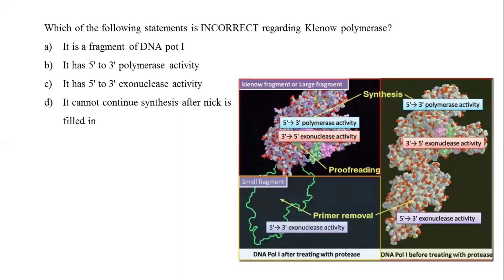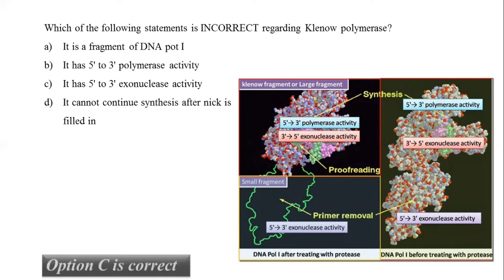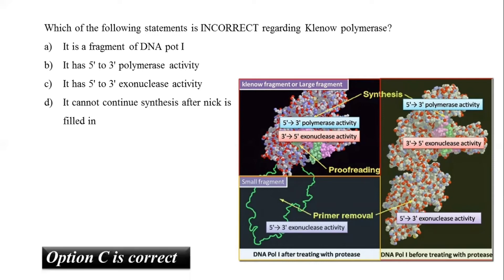Klenow fragment is a mesophilic DNA polymerase derived from E. coli polymerase I, a DNA-dependent repair enzyme. The enzyme exhibits DNA synthesis and proofreading, which is 3' to 5' nuclease activity. In the absence of the holoenzyme's 5' to 3' nuclease domain, it displays moderate strand displacement activity during DNA synthesis. The correct answer is option C — 5' to 3' exonuclease activity.